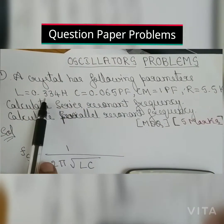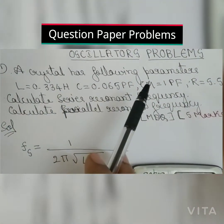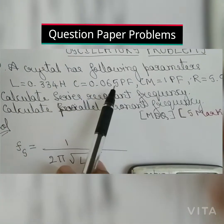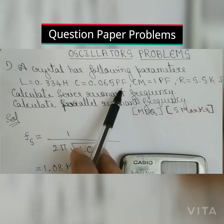Oscillators problem, first problem. A crystal has the following parameters: L equals 0.334 henry, C equals 0.065 picofarad.